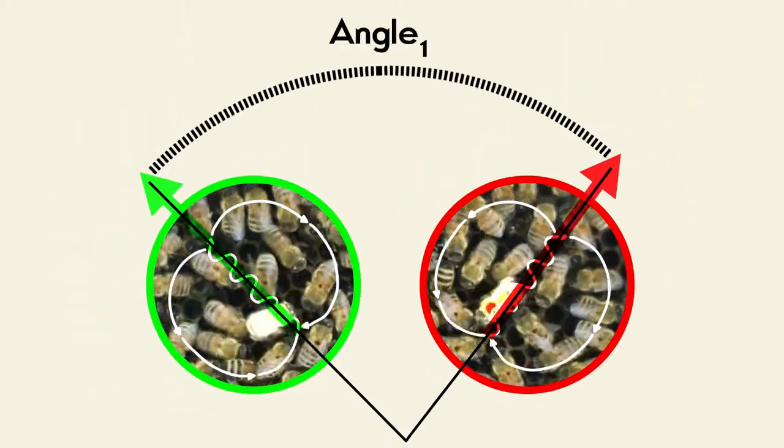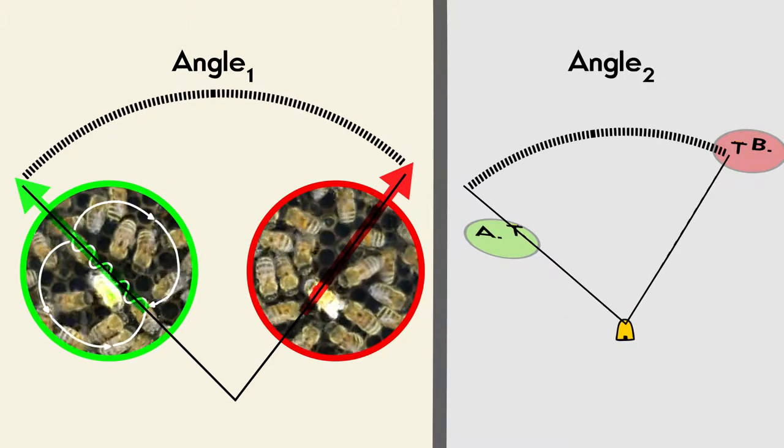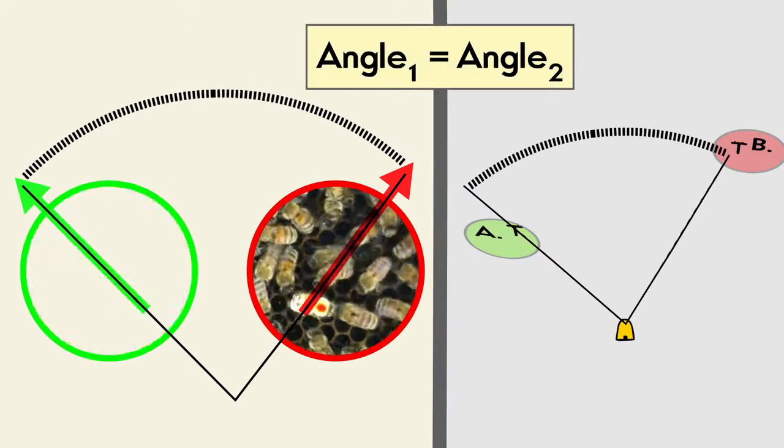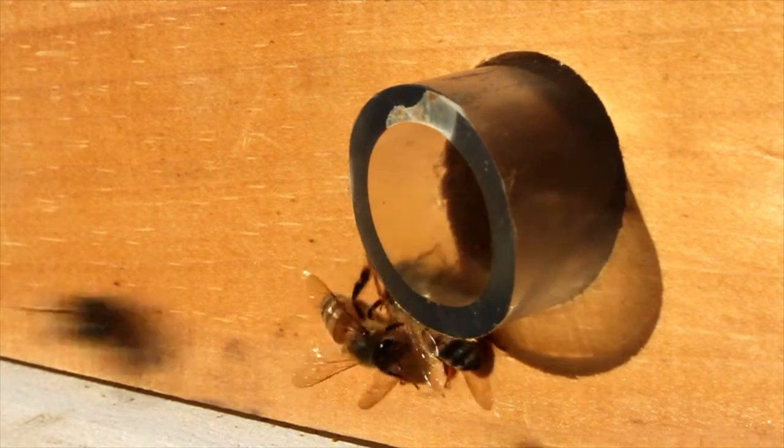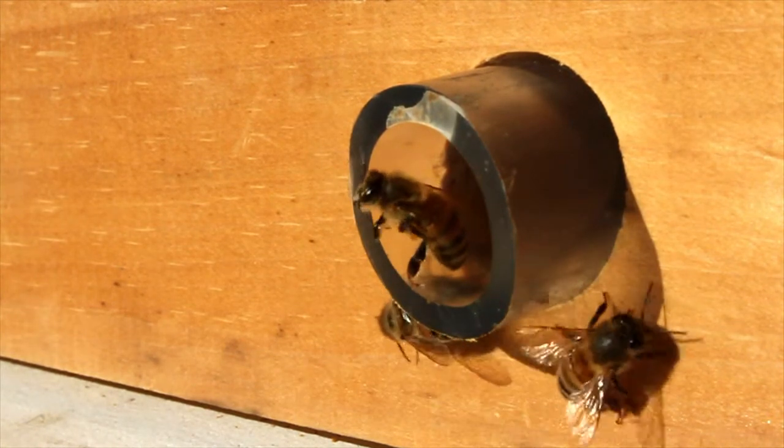Incredibly, the angle of rotation precisely matches the angle between the feeding stations and the hive. This must be a clue to the mystery of how the bees are able to share information about the location of food.